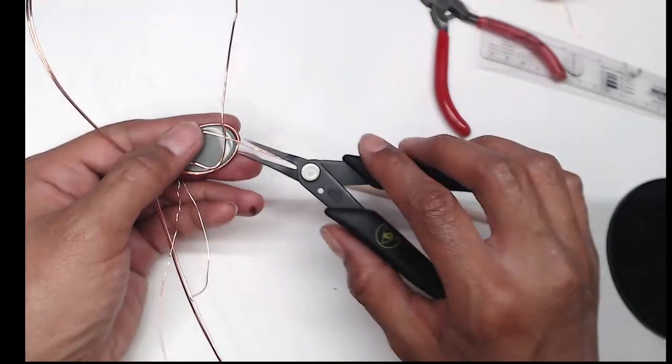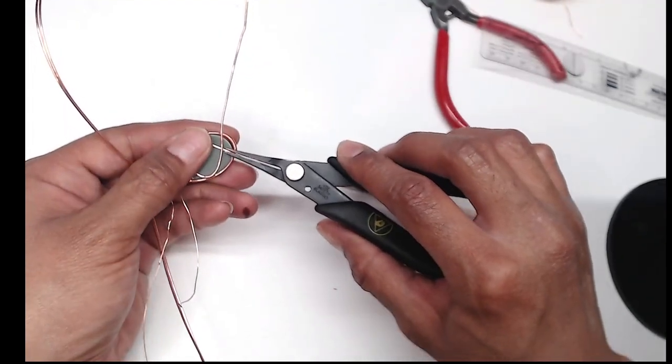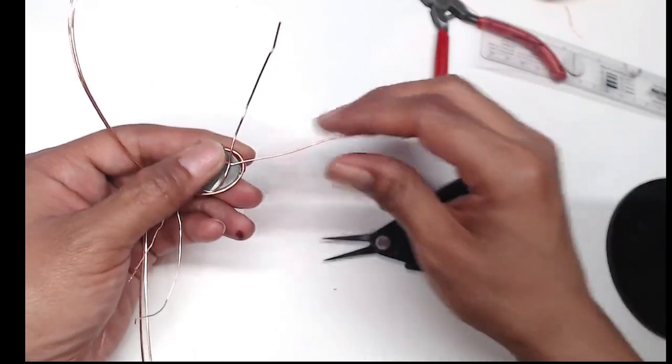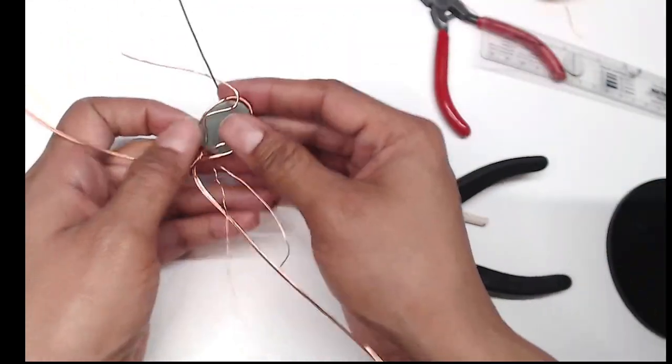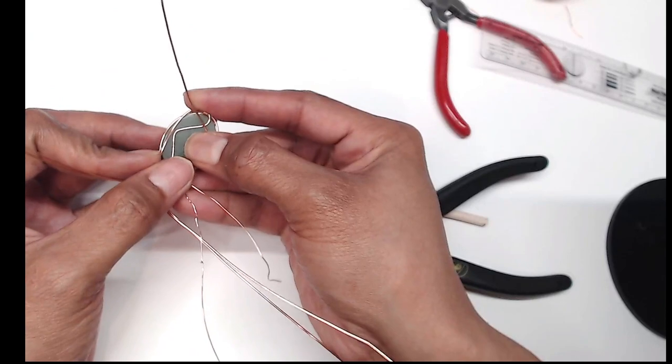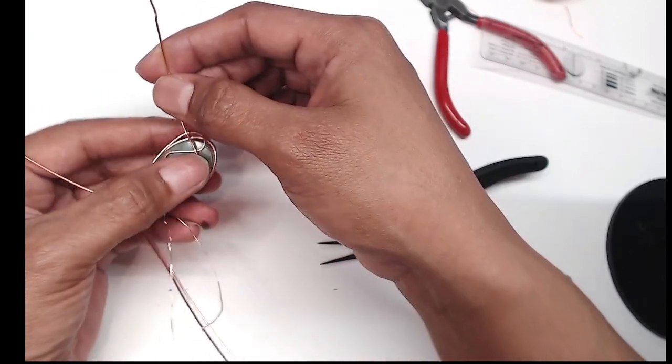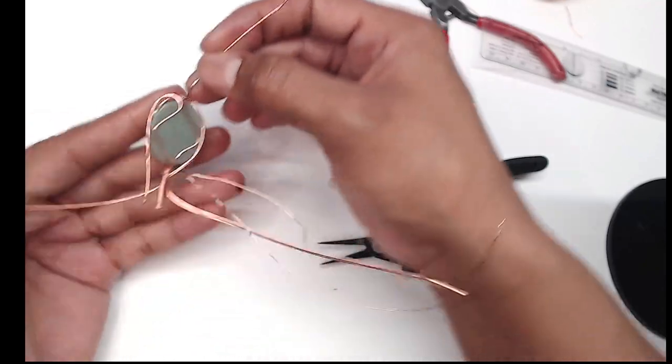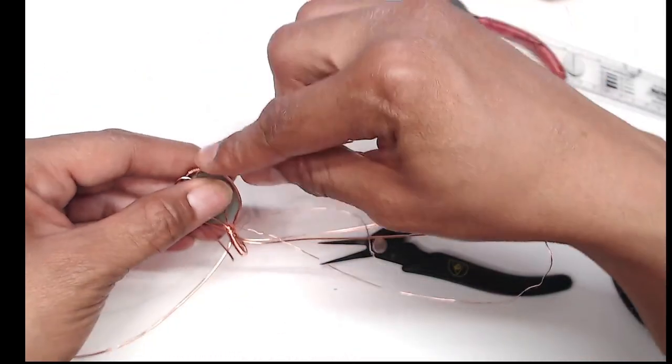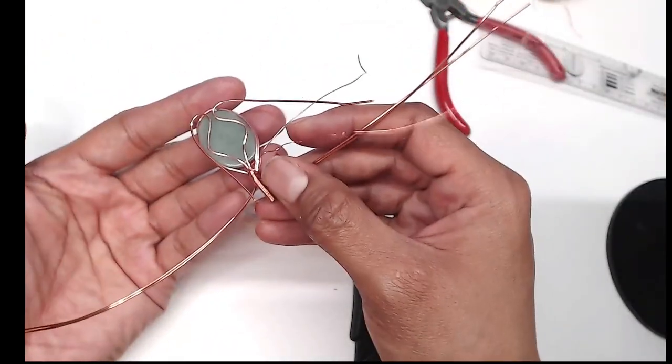When you have something like this, go ahead and make a bend near the center and curve it outwards. This will create a little loop. Go ahead and do the exact same thing on the other side. Here you see I was able to just kind of curve it without having to bend it first.